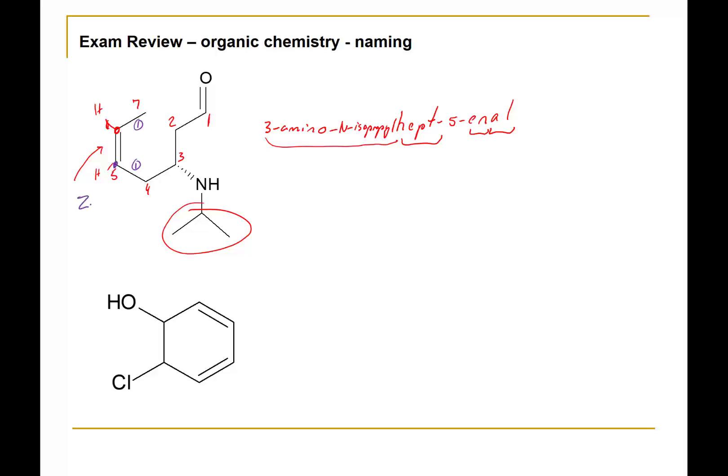We also have a chiral carbon on carbon number 3 so I'm going to prioritize. In this case I'm going to use a green pen. The nitrogen has the highest priority and then looking out from carbon number 3 we have carbons 2 and 4 and they would have the same priority.